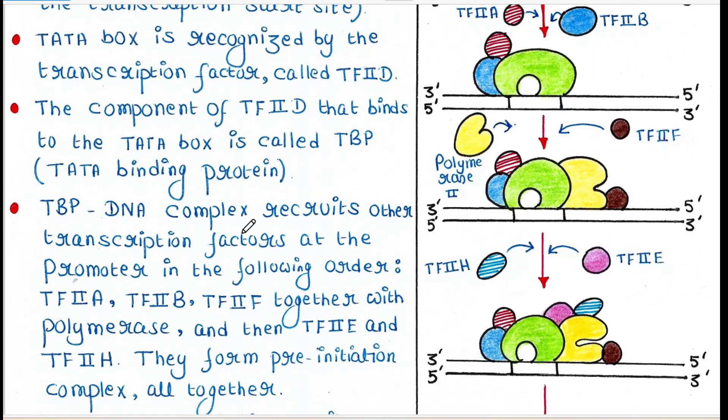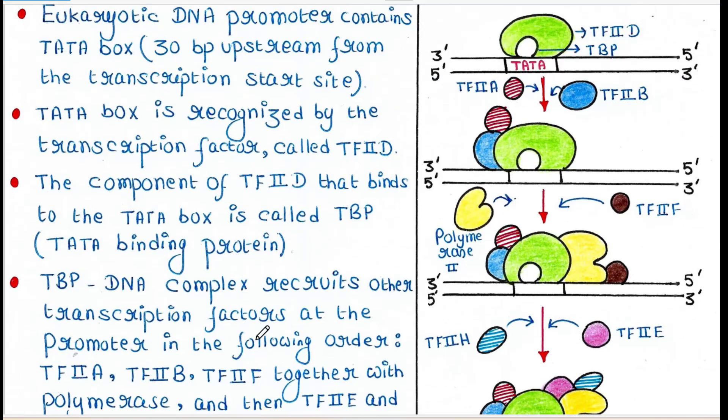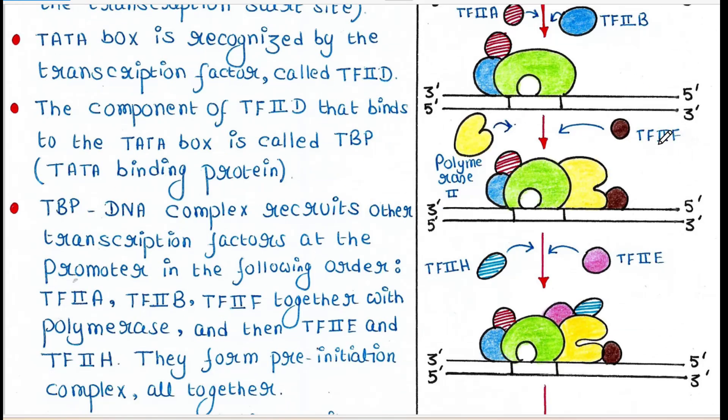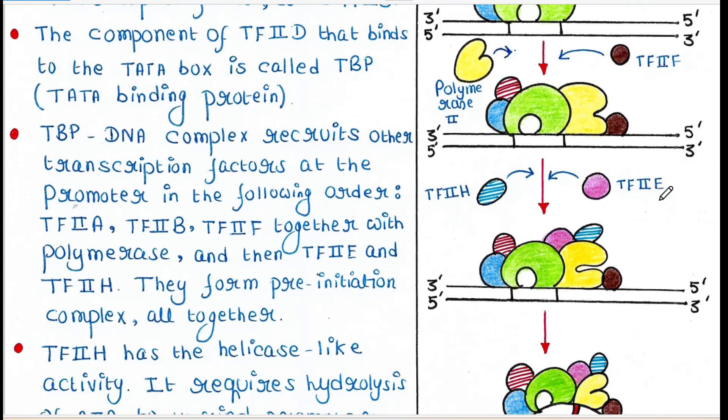TBP-DNA complex recruits other transcription factors at the promoter in the following order: TFIIA, TFIIB, TFIIF, polymerase 2, and then TFIIE and TFIIH. They form pre-initiation complex all together.